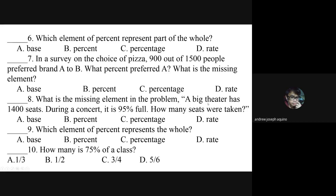Number eight: what is the missing element in the problem? A big theater has 1400 seats. During a concert, it is 95 percent full. How many seats were taken? What is it looking for? Letter A: base. Letter B: percent. Letter C: percentage. Letter D: rate.